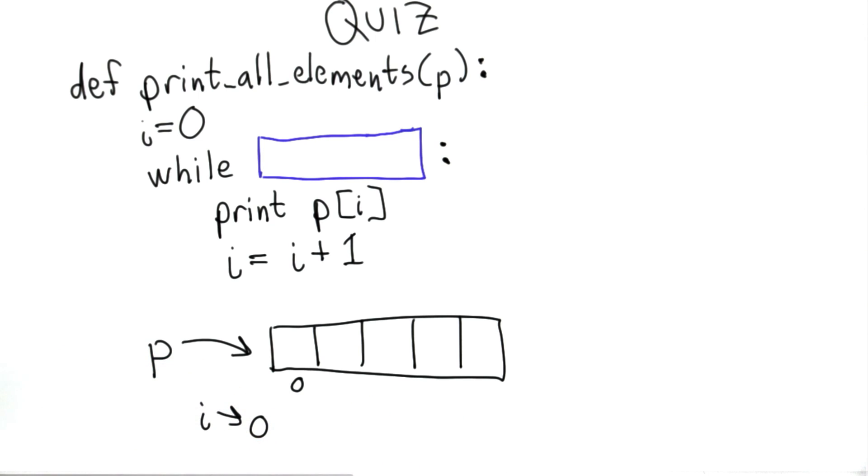And i has the value of 0. That means the value of p[i] is this first element of the list p.